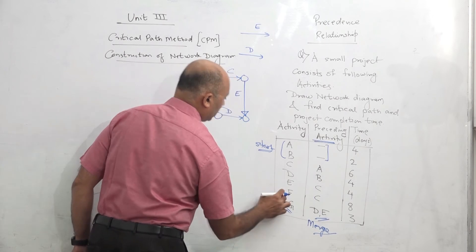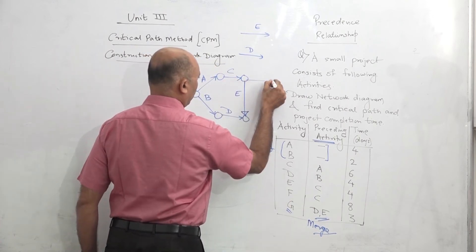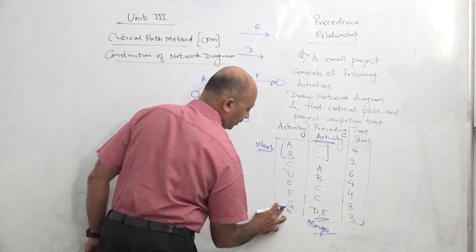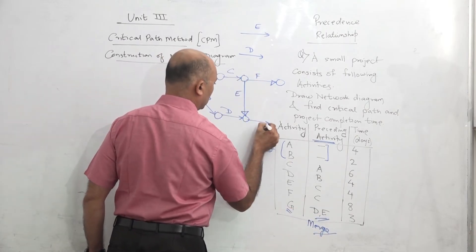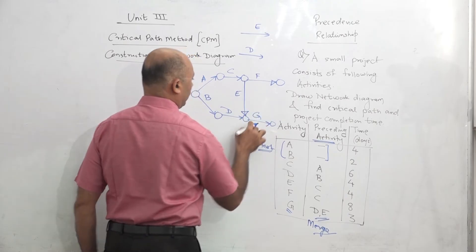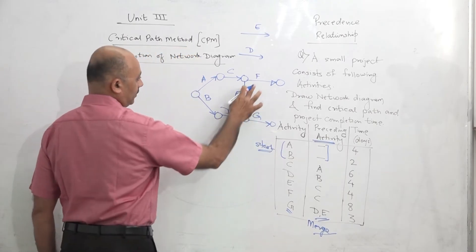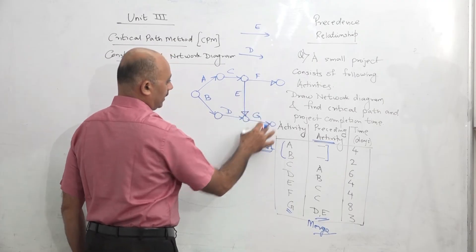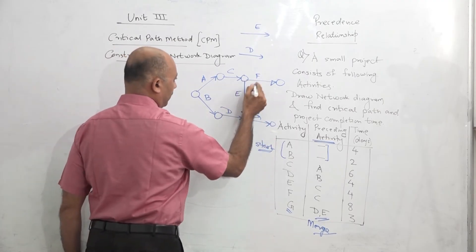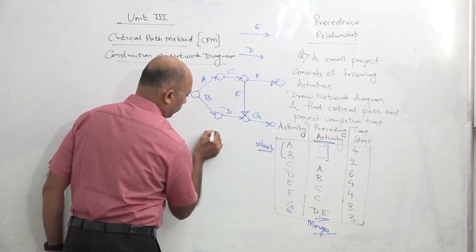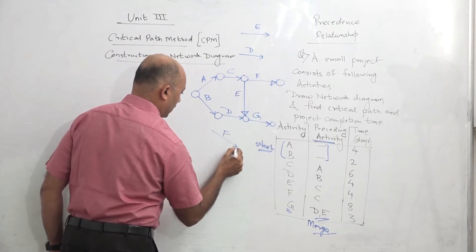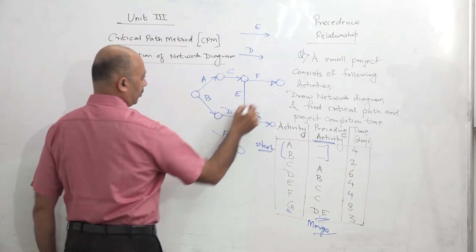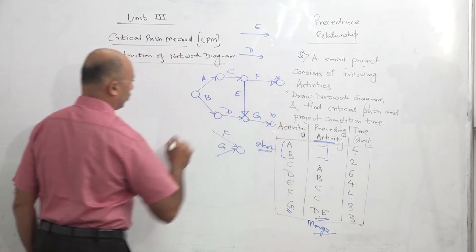After C, there is another activity F. After D and E merge, there is the last activity G. After F and G, there is no other activity — meaning F and G are the last activities. So they cannot remain hanging; F and G should merge together in a common point. The project should have only one starting point and only one ending point.